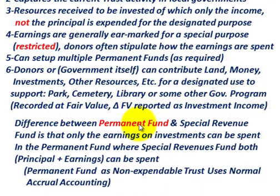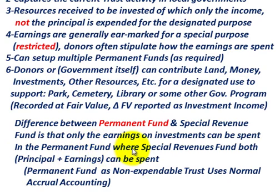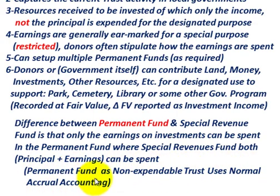The difference between the permanent fund and the special revenue fund is that only the earnings on the investment can be spent in the permanent fund, as we mentioned. In the special revenues fund, both the principal and the earnings can be spent. The permanent fund, as a non-expendable trust, uses normal accrual accounting.